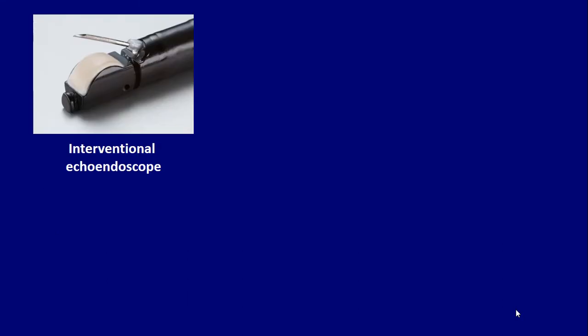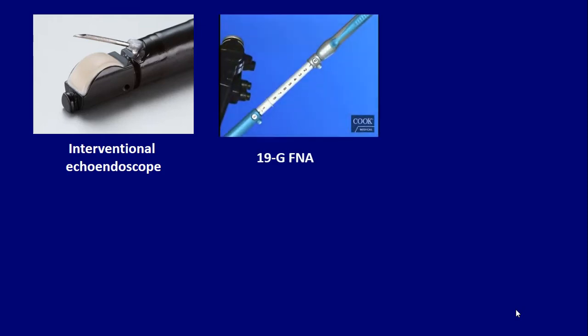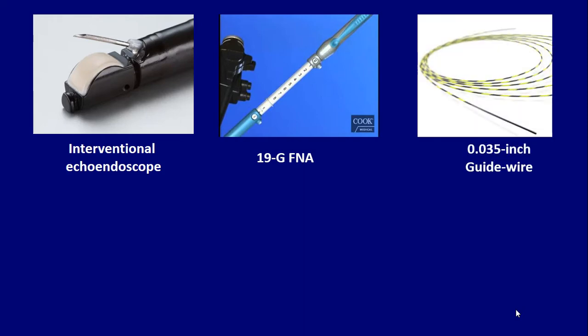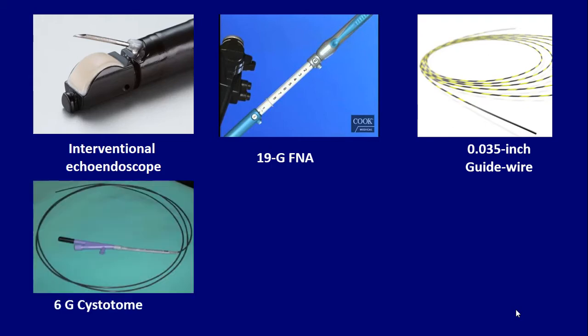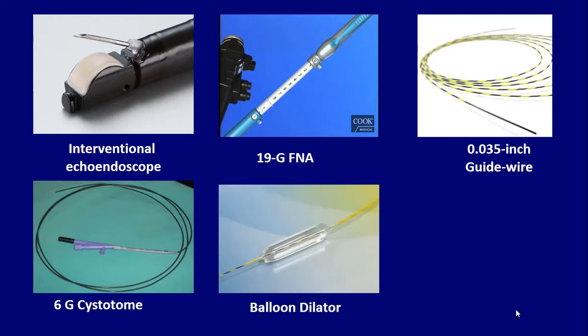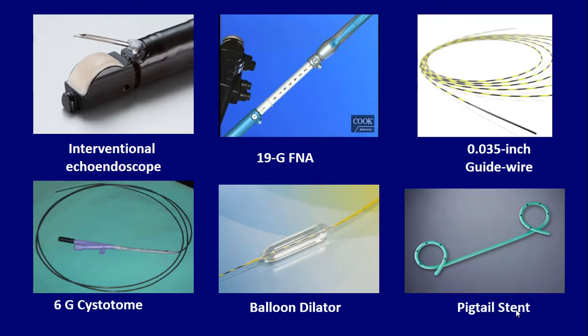We used a linear echoendoscope and a 19-gauge fine needle aspiration needle to pass a 0.035-inch guidewire after puncturing the cyst. Then we punctured the cyst with a 6 French cystotome system. Following this, we dilated the tract with a balloon dilator, and then inserted pigtail stents.